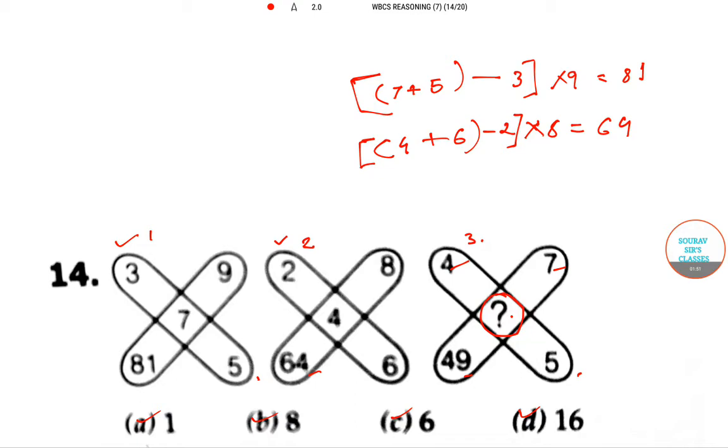So according to this formula, if we calculate for this third diagram, we don't know the middle number, so I can put, there's a question mark, plus 5 minus 4, 4 into 7. The end result is 49.